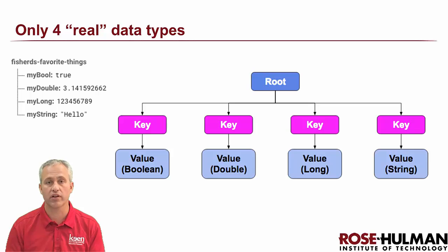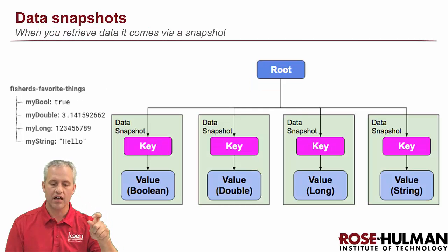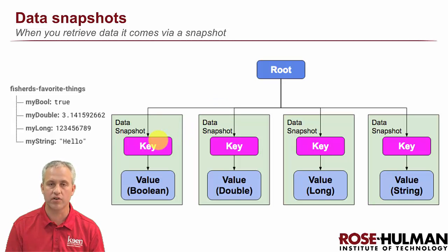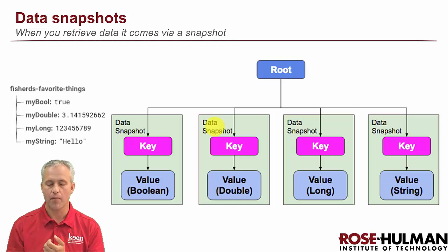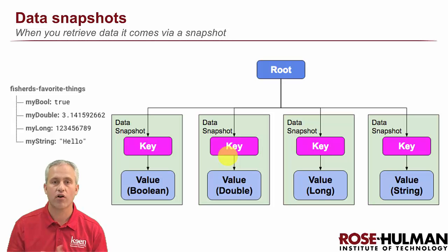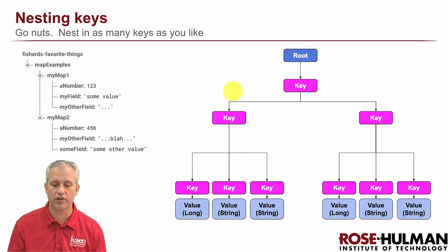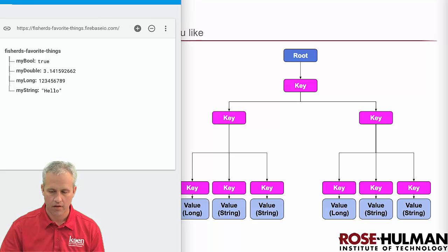The most important concept is keys and values. When retrieving data, you think about data snapshots. If I'm getting data from the cloud, I pick some key, and that key becomes a data snapshot. Each data snapshot has its key and then its value — which is literally everything downstream of the key. In the simplest case, that downstream value is just a single primitive like a double, long, or string.